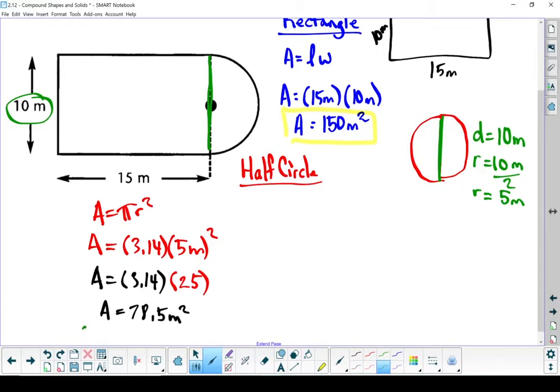Remember that is the full circle. What I need to find that half circle is I'm going to take that and divide it by 2. The area of that half circle is 39.25 square meters.